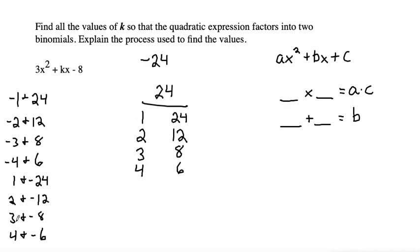These are all the options of our pairs. Remember that these two numbers added together equal b, which is k. So k equals the sum of the two numbers. Negative 1 and 24 is 23. Negative 2 and 12 is 10. Negative 3 and 8 is 5. Negative 4 and 6 is 2.